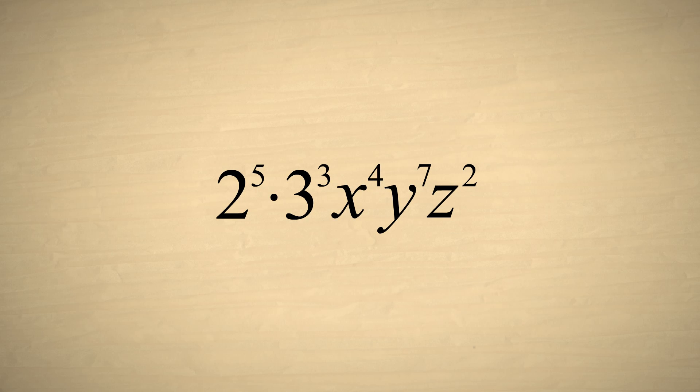If we like, the numeric terms may be kept separate, or we can simplify this a bit further by combining them into a single number. Two to the fifth is thirty-two, and three cubed is twenty-seven, and thirty-two times twenty-seven is eight hundred sixty-four.